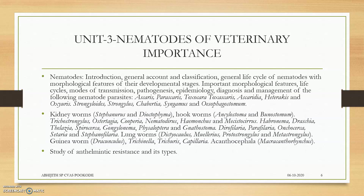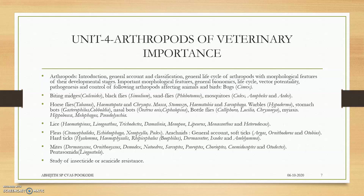Moving to Unit 3, which is the nematodes of veterinary importance. We will be studying the developmental stages, introductory features, general life cycle, epidemiology, diagnosis, and management of these nematodes — mainly Ascaris, Parascaris, Toxocara, Haemonchus, lungworms, hookworms, kidneyworms, guineaworms, etc. We will also be studying anthelmintic resistance and types of anthelmintic resistance.